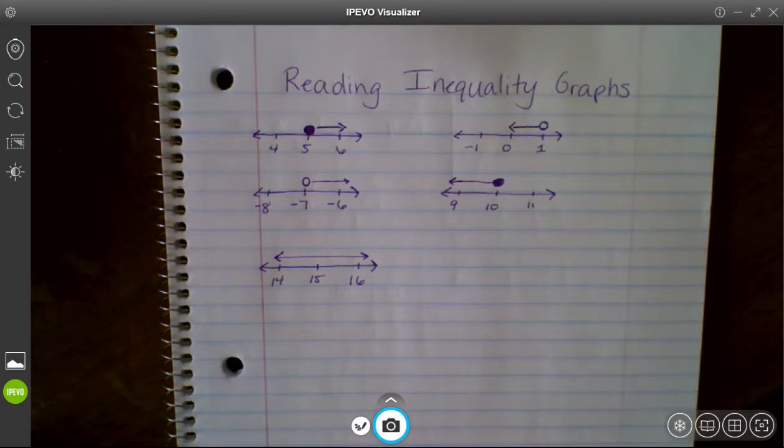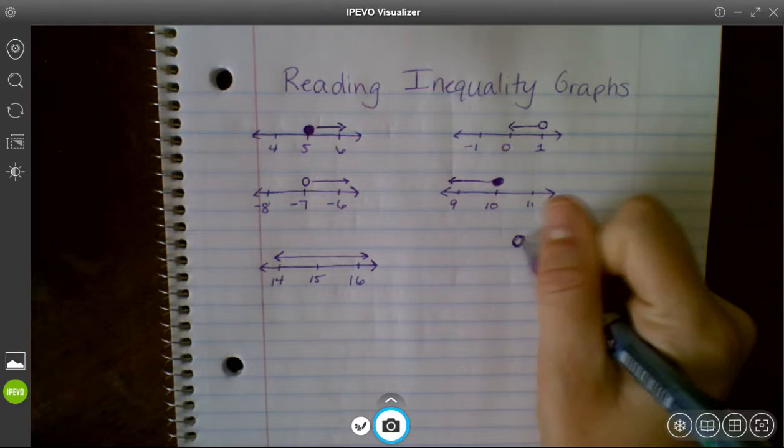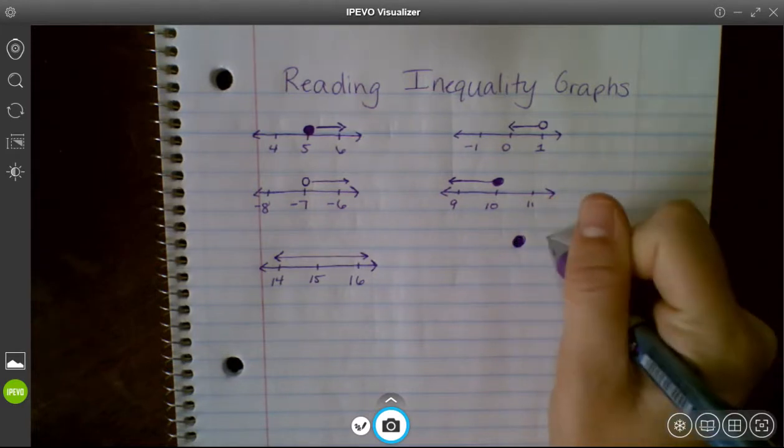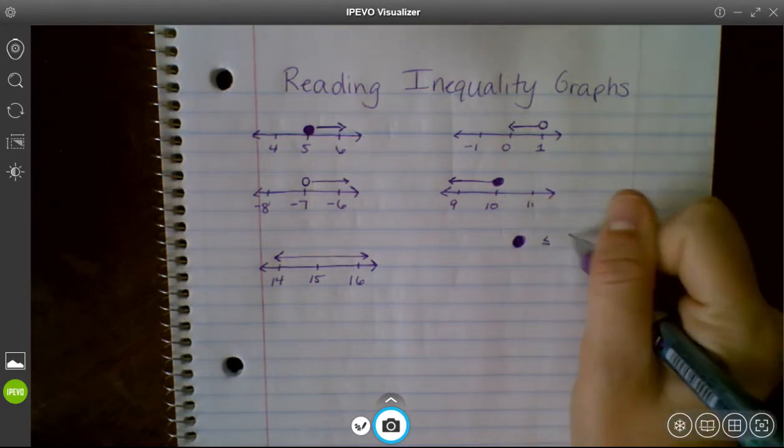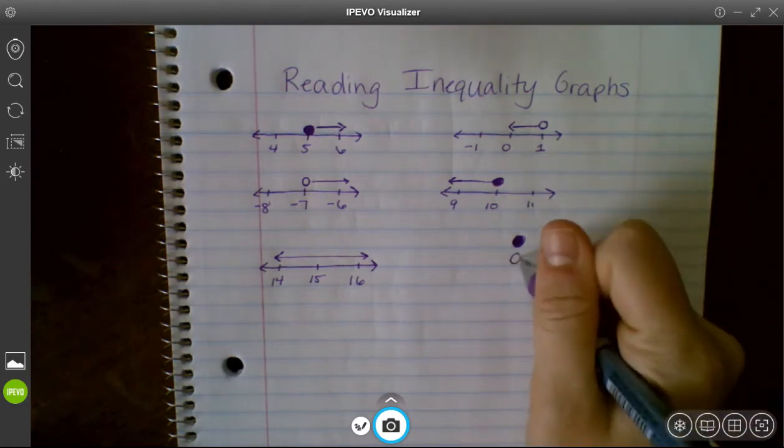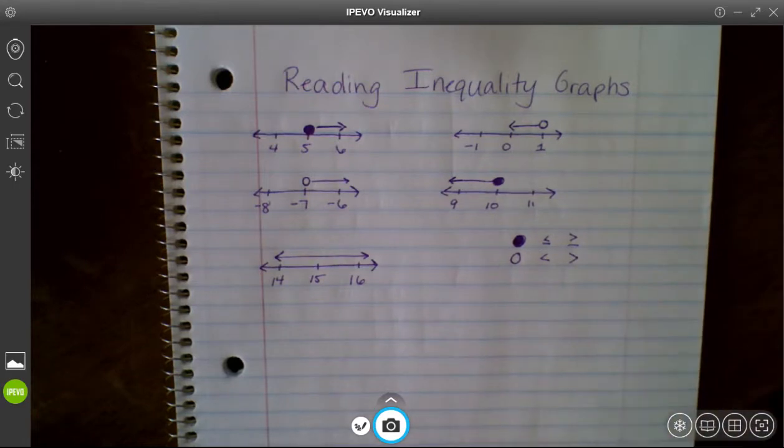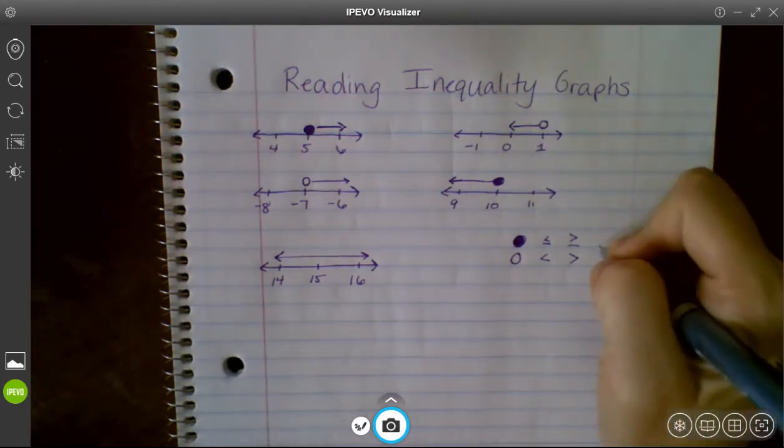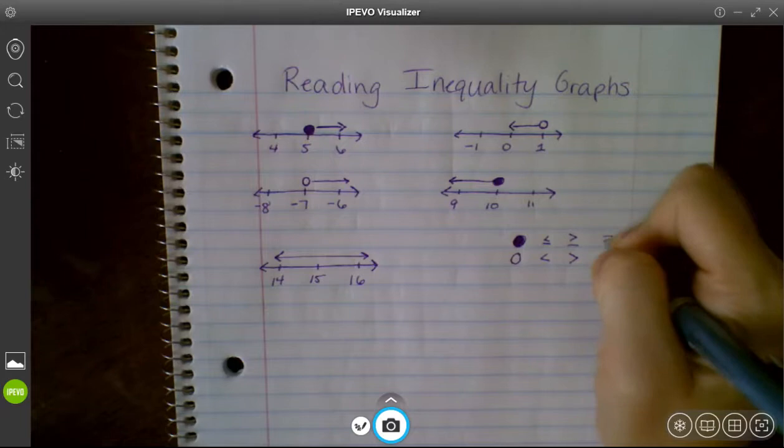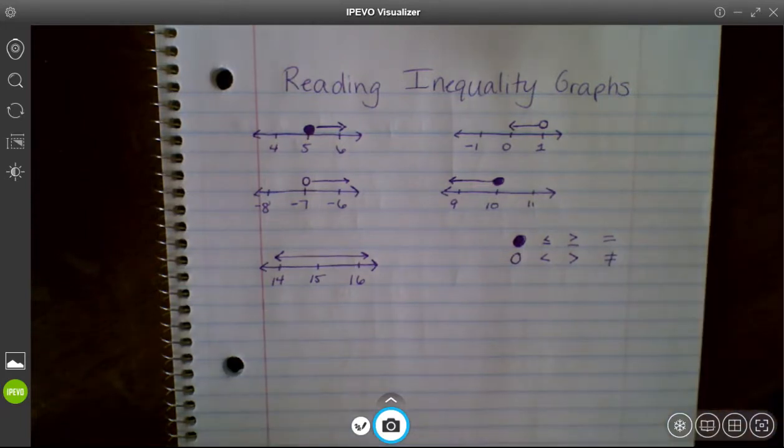So you're going to start by looking at the dots. So if you remember, a closed circle represents less than or equal to or greater than or equal to. An open circle represents less than or greater than. So if we can remember that, this is the equal to, this is the not equal to ones. That will take out half the battle.